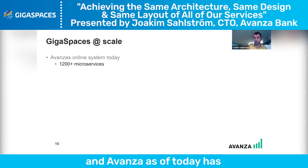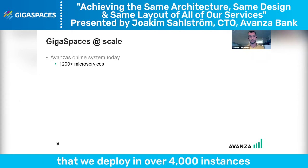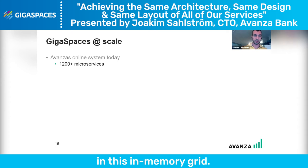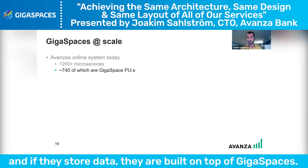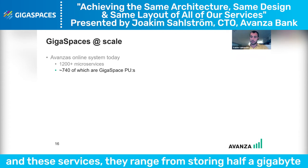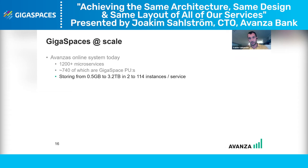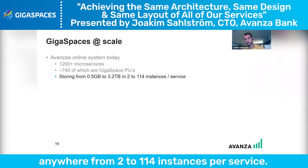Avanza as of today has, in all of its backend systems, roughly 1200 unique microservices — unique programs — that we deploy in over 4000 instances on this in-memory grid. Out of those, about 740 are stateful, and if they store data they are built on top of GigaSpaces. So we have something like 740 PUs in our system, and these services range from storing half a gigabyte up to 3.2 terabytes, deployed anywhere from 2 to 114 instances per service.